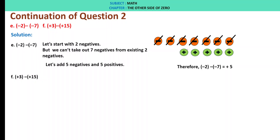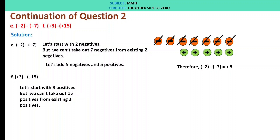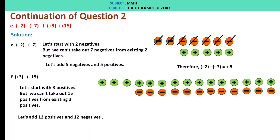F: plus 3 minus of plus 15. Let's start with 3 positives. We can't take out 15 positives from existing 3 positives. So let's add 12 positives and 12 negatives. We strike out all 15 positives. Therefore, we are left with 12 negatives. Therefore, plus 3 minus of plus 15 is minus 12.